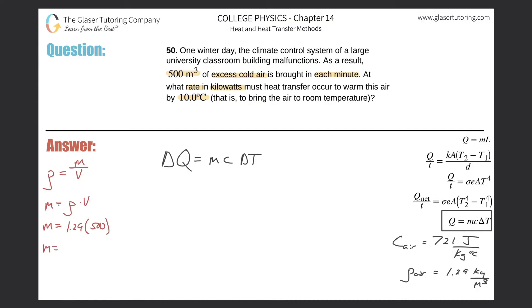So notice the cubic meters would cancel, and this would leave me with 1.29 times 500. So we'll just calculate that, get that out of the way. So this is basically 645 kilograms of air, okay? So that's the mass of the air.